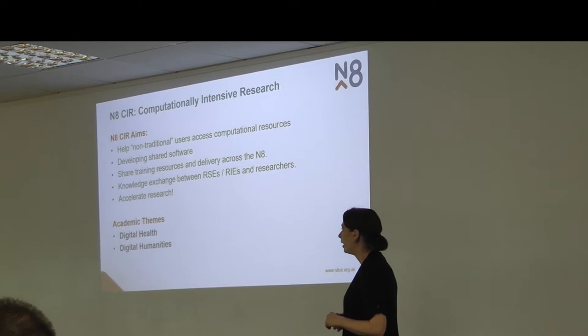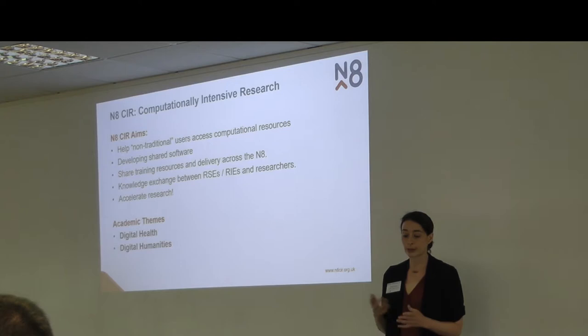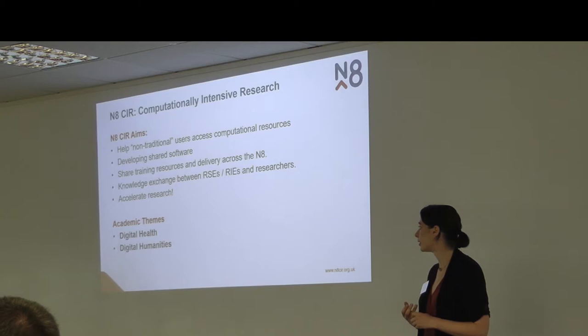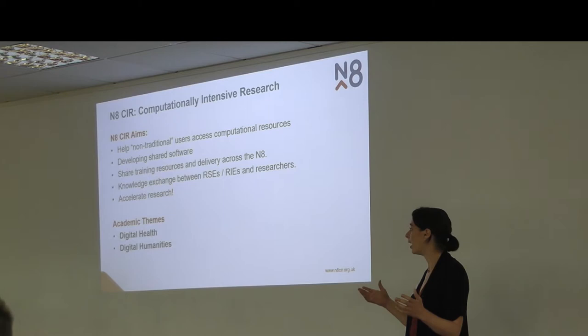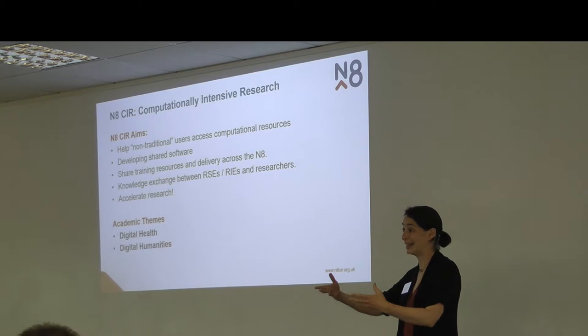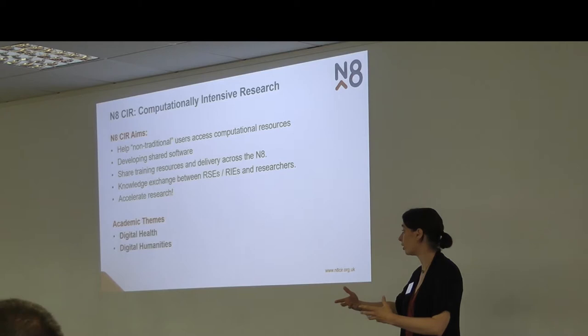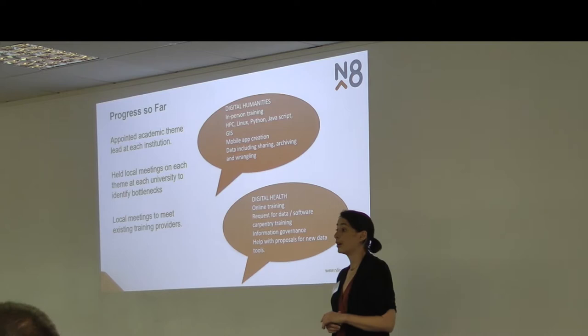NACIR has decided to focus initially on two research themes: digital health and digital humanities. These were chosen because research in these themes is done in pretty much all the universities. They were also chosen as themes where there's quite a lot of scope for improvement and where we feel there's a lot of potential we could contribute to. The first step was to identify academic leads in each of the two research themes at each institution.